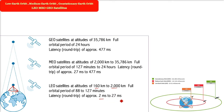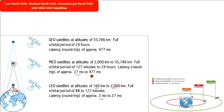Now coming to Medium Earth Orbit, MEO. These are at an altitude of 2000 km to 35,786 km, that is around 36,000 km. The full orbital period is around 127 minutes to 24 hours. Latency is 27 ms to 477 ms.